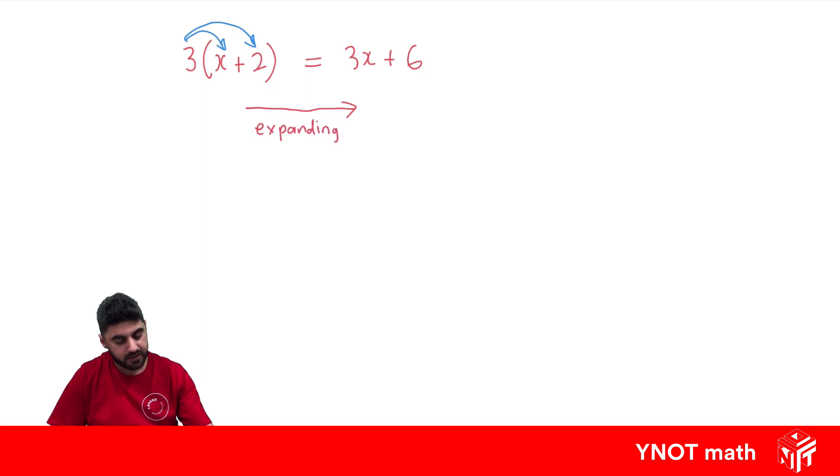Factorizing is going from 3x plus 6 into bracket form. So this is factorizing. And how do we factorize?